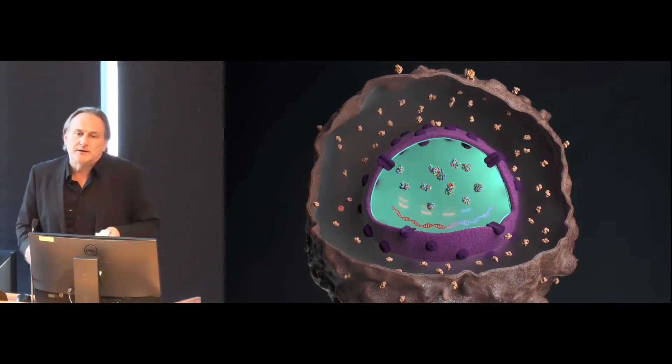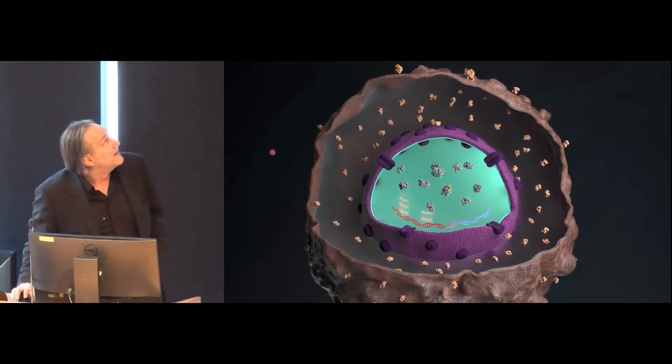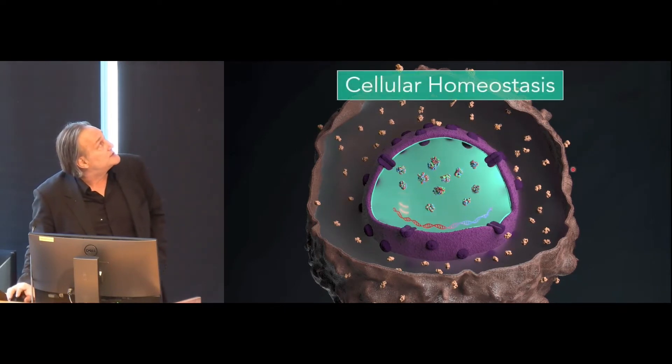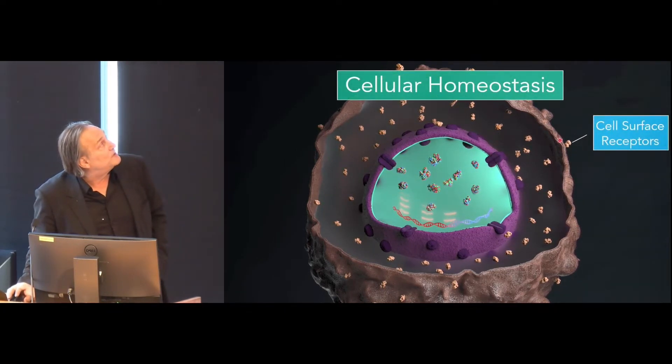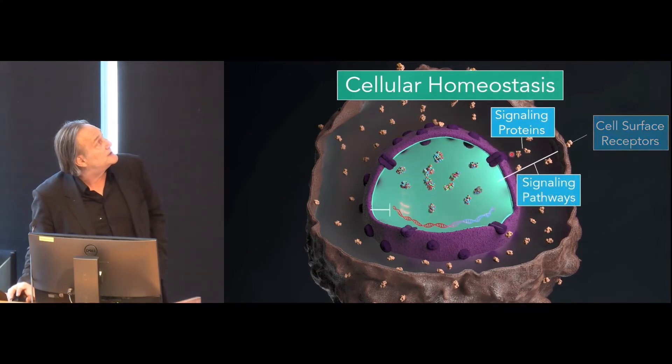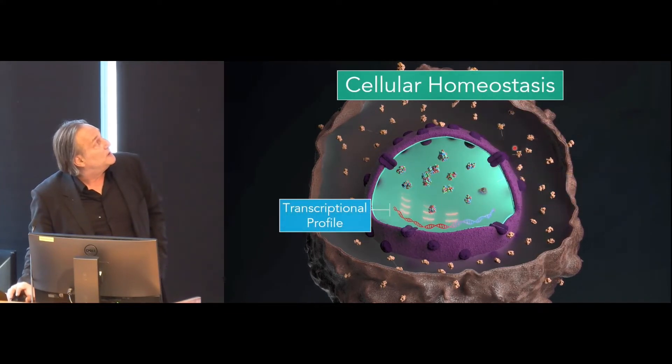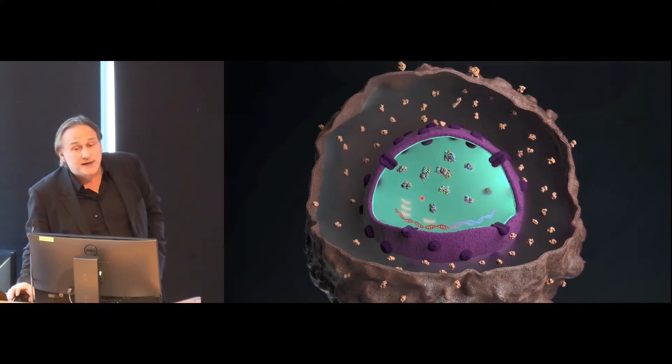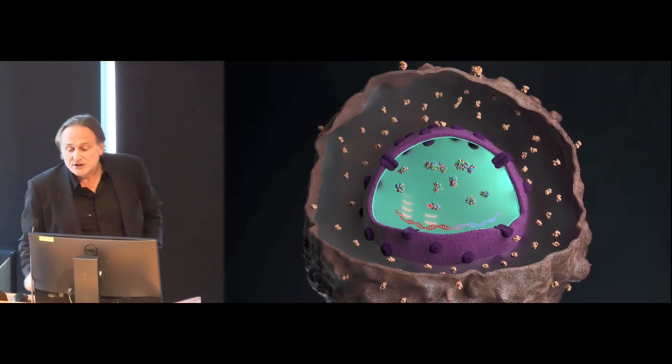You can see there are proteins called receptors that sit on the membrane of the proteins, proteins called signaling proteins that are in between the membrane and the nucleus, and then there are these proteins in the nucleus whose role is to actually regulate the expression of genes.